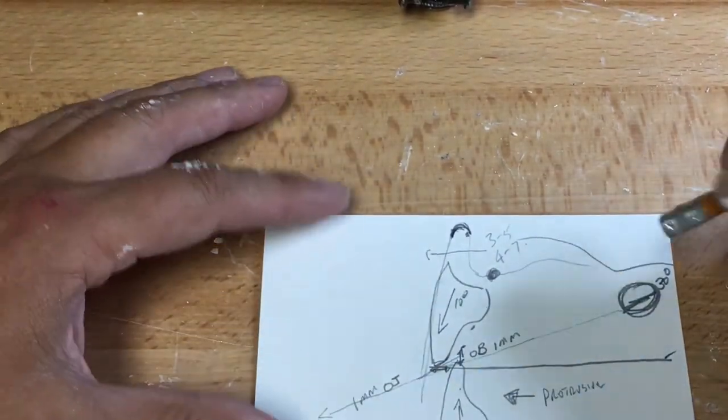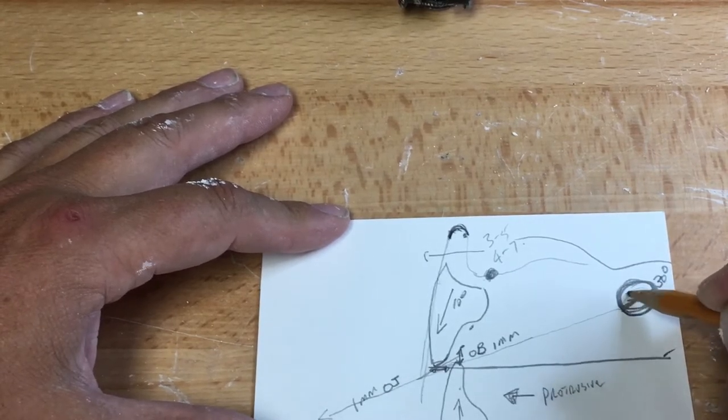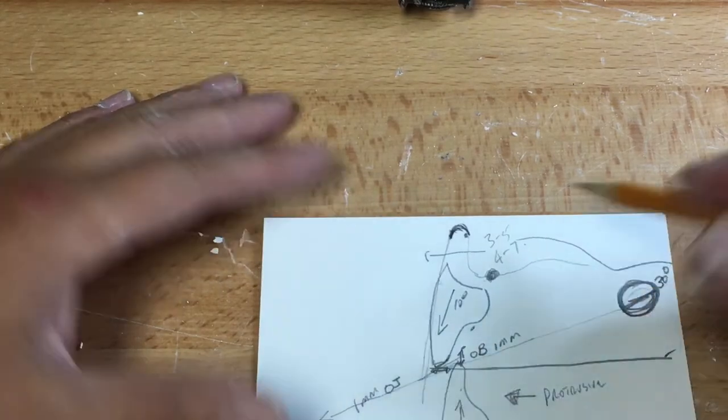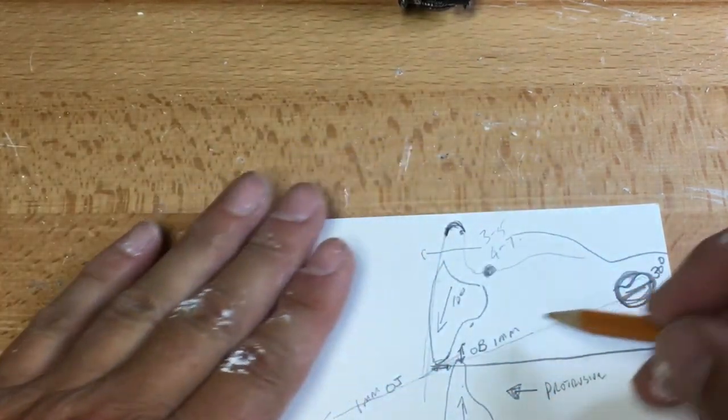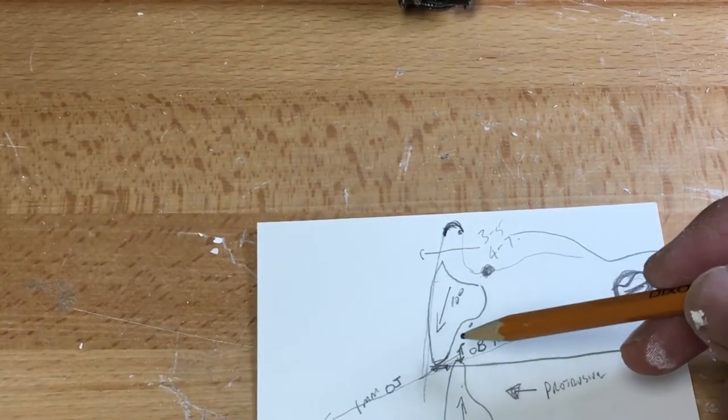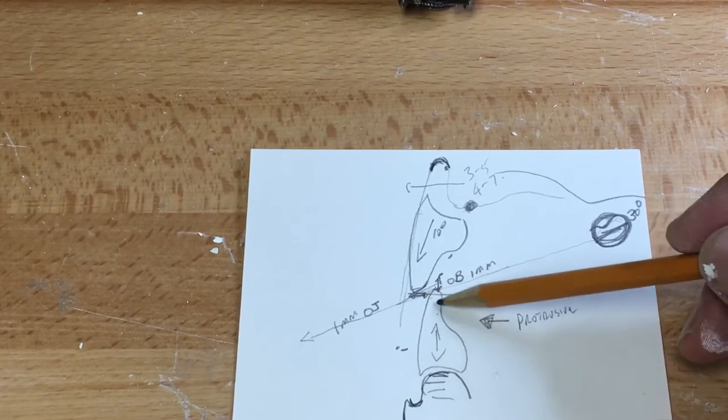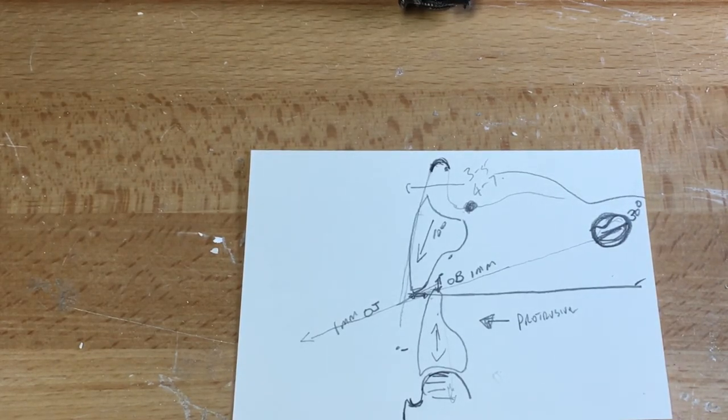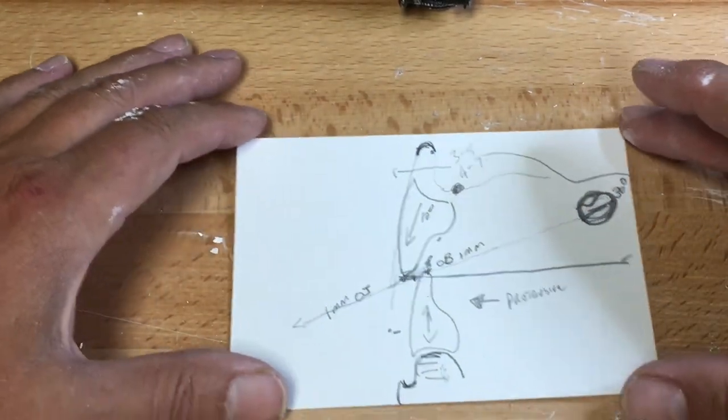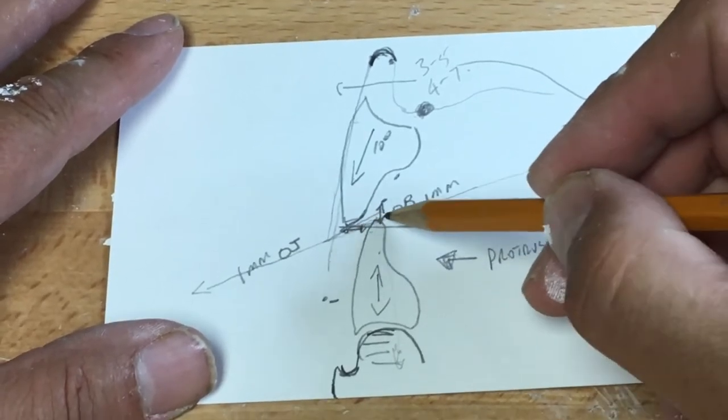When we have this protrusive movement this way, these lower anteriors must just miss on this angle, because we have an angle here. This is the condyle. And I think on this case, we're doing 30 degrees or something like this. This condyle will protrude the mandible downwards. And we'll just miss these anterior teeth. This is what we call group function.